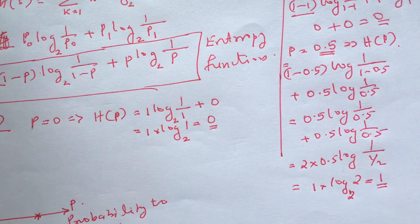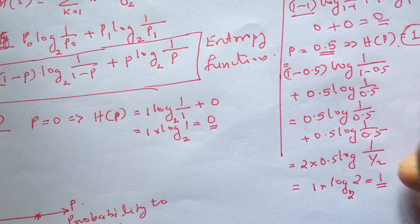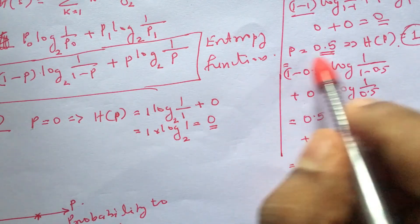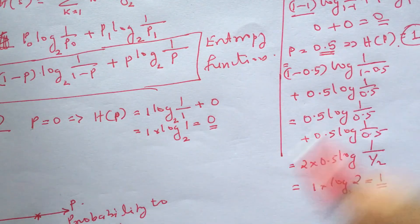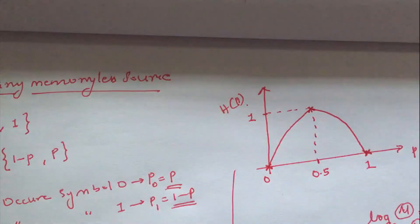So we plot it and the value at p equals 0.5 is 1. The maximum entropy value is 1 bit.